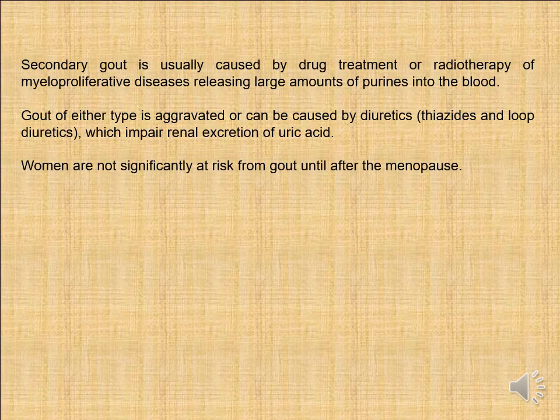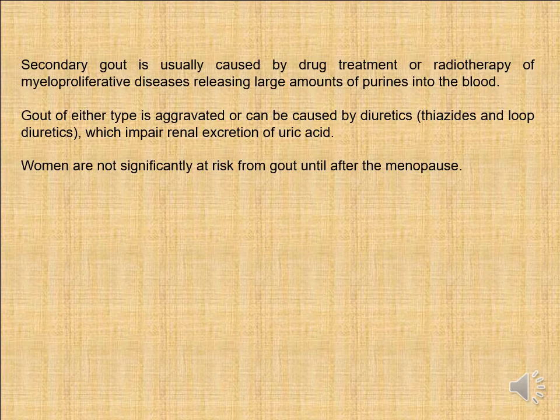Secondary gout is usually caused by drug treatment, radiotherapy, or myeloproliferative disease, releasing large amounts of purines into the blood. Other types of secondary gout can be caused by thiazides and loop diuretics, which impair renal excretion of uric acid. Women are not significantly at risk for gout until after the menopause.